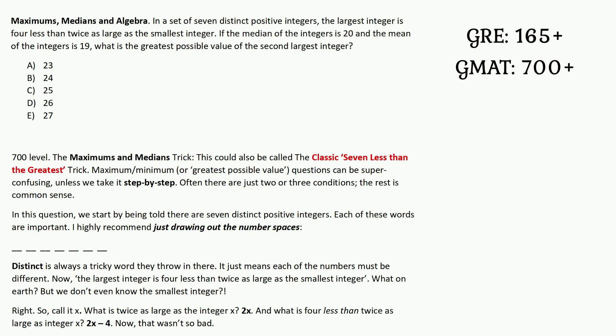In a set of seven distinct positive integers, the largest integer is four less than twice as large as the smallest integer. If the median of the integers is 20, and the mean of the integers is 19, what is the greatest possible value of the second largest integer?